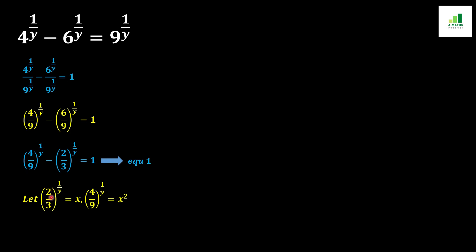In the next step we use the substitution: let x equal (2 over 3) to the power 1 over y, and therefore (4 over 9) to the power 1 over y equals x squared. We replace both values inside equation 1, so (4 over 9) to the power 1 over y becomes x squared, and (2 over 3) to the power 1 over y becomes x, giving us x squared minus x equals 1.